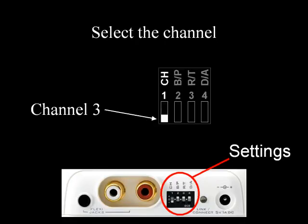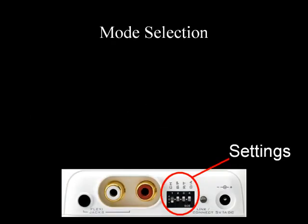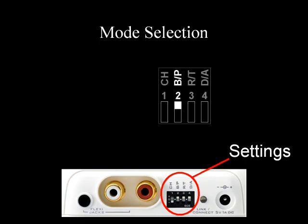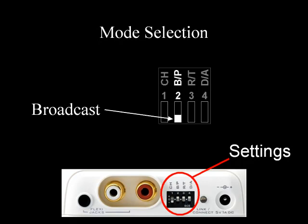Switch 2 chooses between broadcast or paired mode. We are going to use broadcast mode, so on both pipeline units set Switch 2 to the bottom setting. If you want to transmit between only two pipeline units, you should use paired mode — for this, you should look at the paired mode video instead.